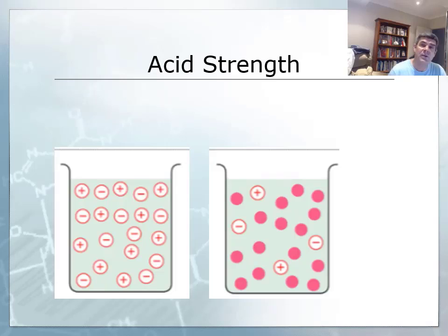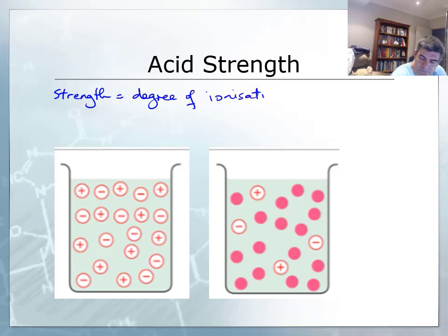First, let's look at acid strength. Strength is equivalent to the degree of ionization. Another way to look at it: it's the ratio of molecules to ions.